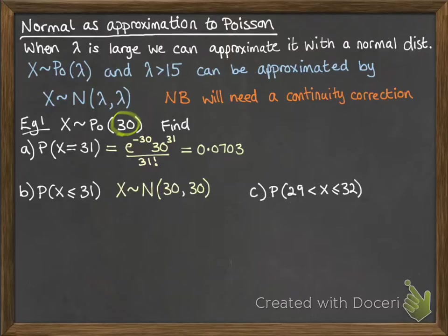So now x follows a normal distribution with mean 30 and variance 30. So our probability has now got to be less than 31.5. Remember, that's the continuity correction. So we want 31 and under, including 31. So on the normal curve, that will be less than 31.5. We go that 0.5 extra to make sure the 31 gets included.